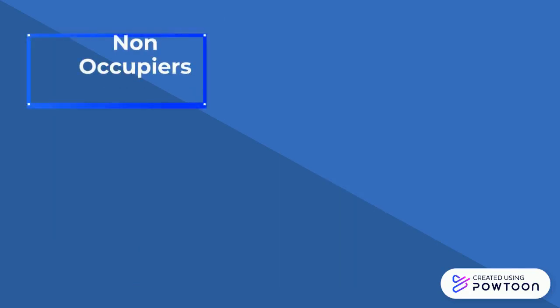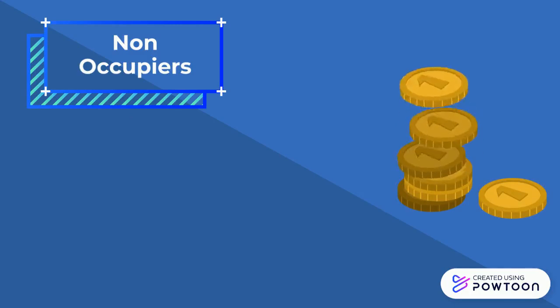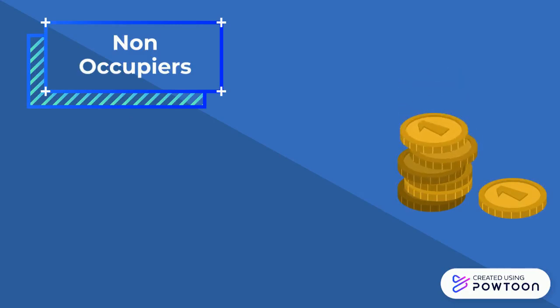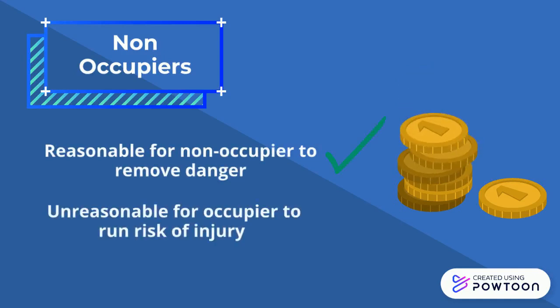For non-occupiers, the usual rules still apply to pure economic loss, and for personal injury the non-occupier will be held liable where it is reasonable for them to remove the danger and unreasonable for the occupier to run the risk of injury.